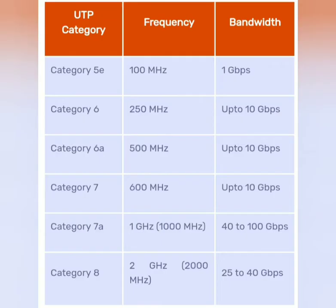Twisted Pair Cable, Bandwidth and Frequency Range is classified into various categories. Twisted Pair Cables can do data transfer at specific cycles per second, also called frequency.